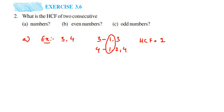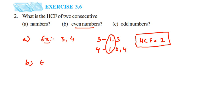Now the second one: two consecutive even numbers. Even numbers means like after 2 the next even number is 4, so 2 and 4 are consecutive even numbers — 4, 6, 8, 10, like that. So let us take an example of 6 and 8.